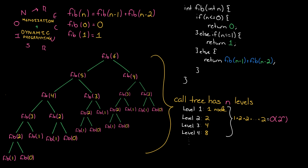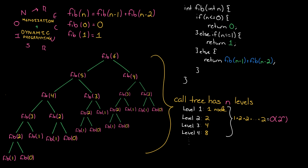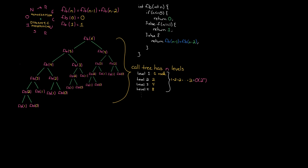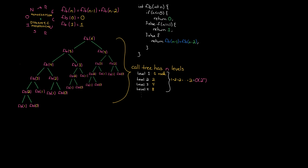Why is this algorithm so inefficient? The reason is that we keep doing things repeatedly. We compute Fib of 4 twice. Fib of 3 gets computed three times. Fib of 2 gets computed five times. Now obviously these values haven't changed — Fib of 4 is always the same thing. So what we should be able to do is compute these values once, and if we ever have to compute them again, just return the stored value. That's what the most basic implementation of a memoization algorithm is.